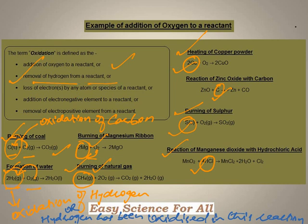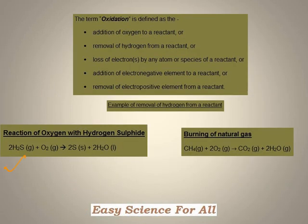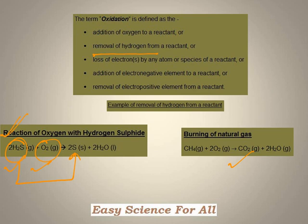Now let us discuss the second criteria for oxidation — that is, removal of hydrogen from a reactant. In this first example, you can see that there are two reactants, namely hydrogen sulfide and oxygen. On reaction with oxygen, hydrogen sulfide is getting converted to sulfur — that is, removal of hydrogen is taking place from the hydrogen sulfide. So going by this criteria, we can see that hydrogen sulfide has been oxidized to sulfur, or in other words, oxidation of hydrogen sulfide has taken place in this reaction.